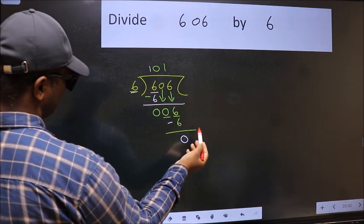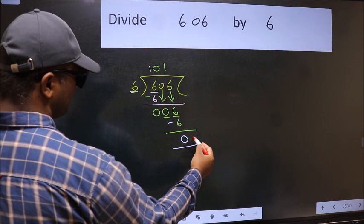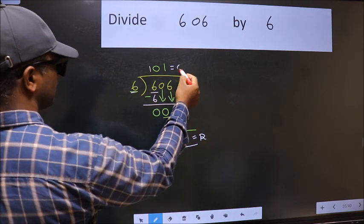No more numbers to bring it down. So we stop here. This is our remainder and this is our quotient.